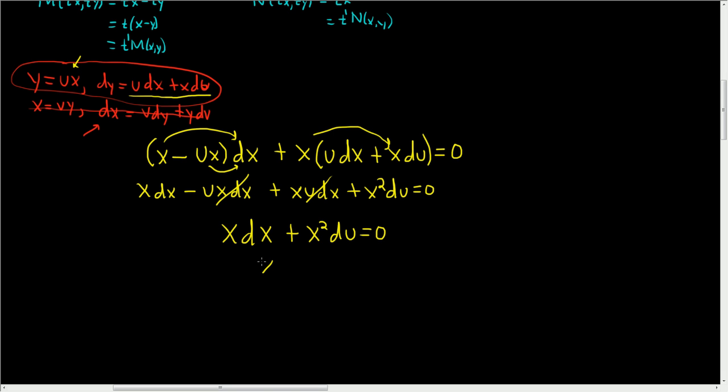Let's go ahead and subtract the x squared. So we have x dx equals negative x squared du. Dividing both sides by x squared, I'll leave the negative over here on the right hand side,